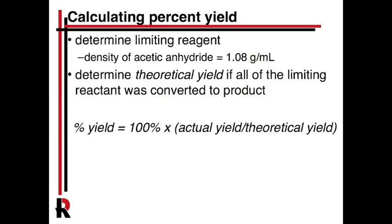Percent yield is a pretty standard approach in organic chemistry or in any chemistry where we're making something. The idea is to determine the limiting reagent — it's not phosphoric acid, that's the catalyst — so you need to figure out if it's either acetic anhydride or salicylic acid. The density of acetic anhydride is 1.0 grams per mL, and you can do that calculation before you come in. The stoichiometry is one-to-one: one molecule of salicylic acid and one molecule of acetic anhydride each get converted to one molecule of aspirin. So you should be able to figure out the limiting reactant and determine the theoretical yield.